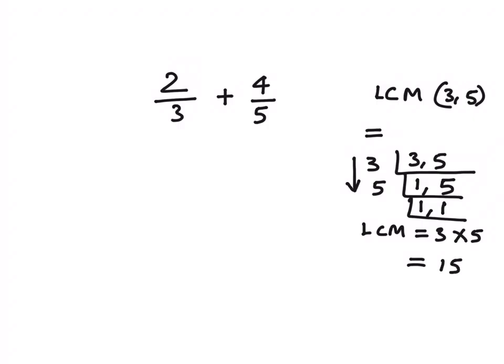Now once we have found the LCM, we'll use this number to find the sum of these two fraction numbers. So 15 would come in the denominator of both these numbers. Now we have to convert 2 by 3 into its equivalent fraction such that the resulting number has 15 in its denominator. So what do you multiply 3 by to get 15? 3 into 5 is 15, so if you're multiplying the denominator by 5, you need to multiply the numerator by 5 as well to get the equivalent fraction. So in the numerator you would get 10.